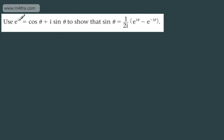In this question it says: use e to the i theta equals cos theta plus i sine theta to show that sine theta is 1 over 2i times e to the i theta minus e to the minus i theta. I'm not going to directly answer the question as such, but we're just going to spend some time looking at it in a bit more depth.